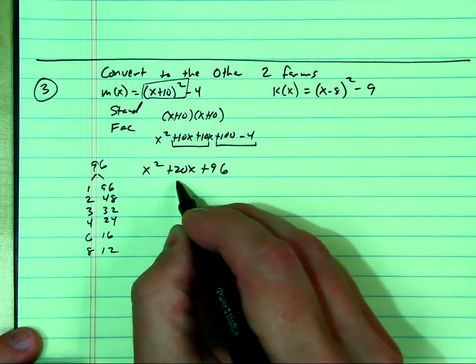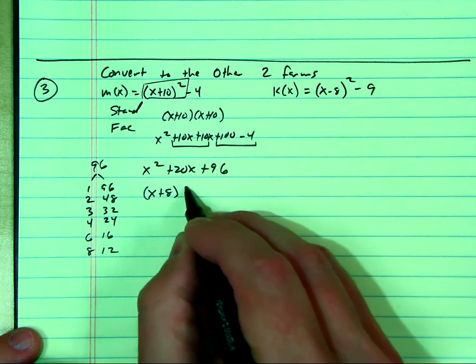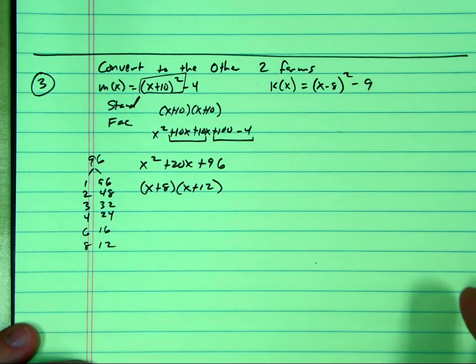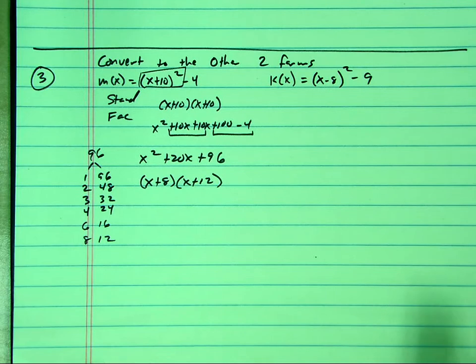So it factors into 8 and 12, giving us x plus 8 and x plus 12. Wow, that was a close one. I knew I set these up correctly when I made the review document.